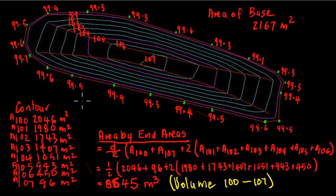Which basically says the distance between the cross sections, or in this case the contours, divided by two, and then we multiply that by the first contour which in this case is 100 and the last contour which is 107, and then plus two times all of the intermediate ones which would be 101 through 106. Here I've written in all the values and worked it out, and we get a volume of 8645 cubic meters.